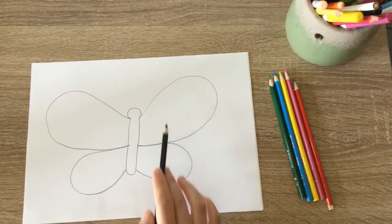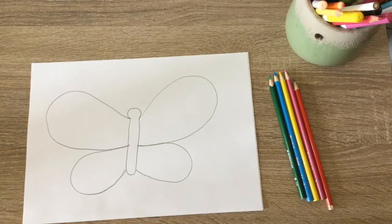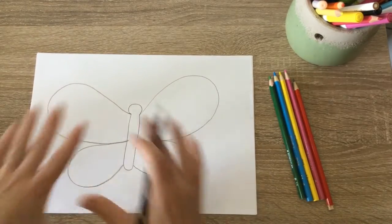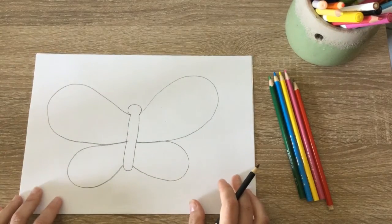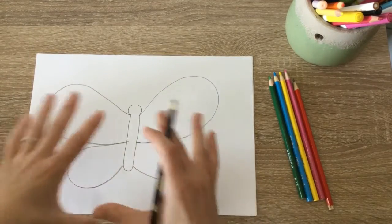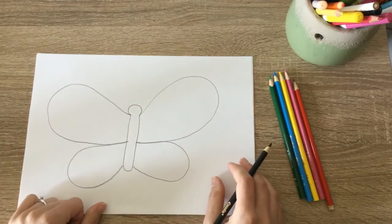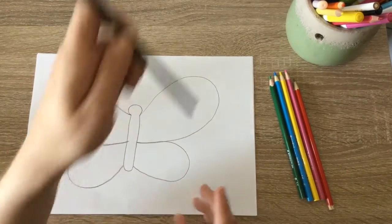So now I've got one, two, three, four wings. And you know what I love is that we've used up most of our paper. It's good to try to make your pictures big enough to use up a lot of your piece of paper.